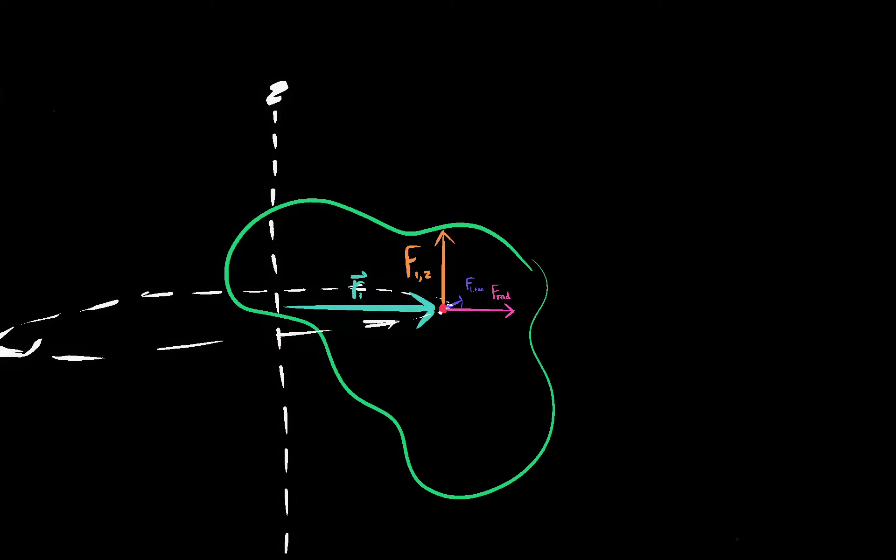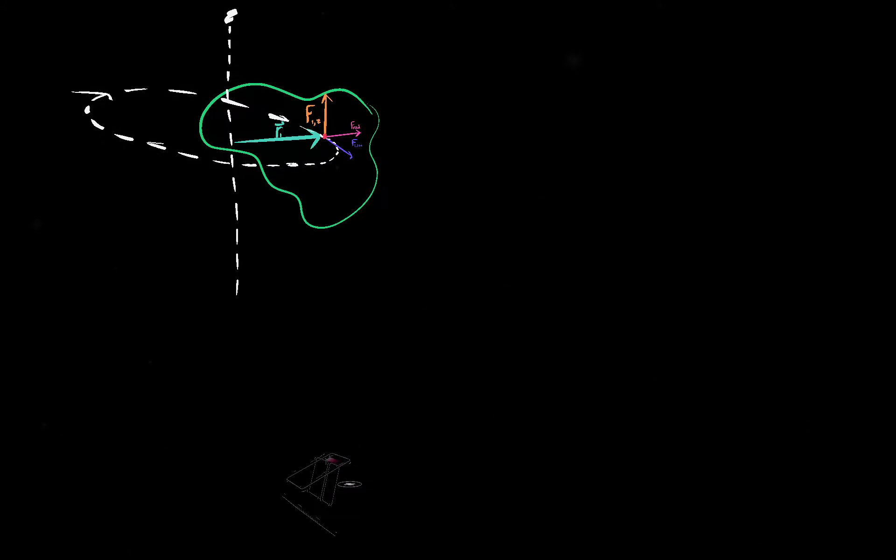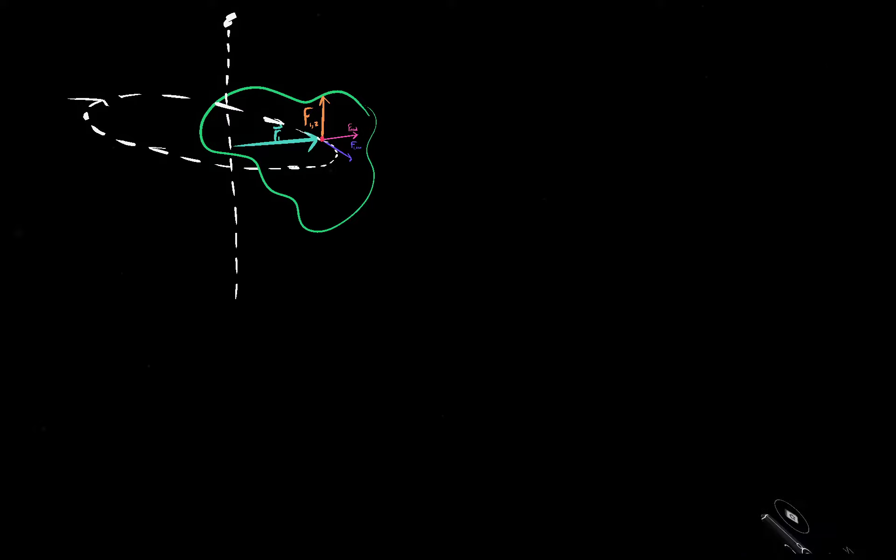Newton's second law says that F_tan is equal to ma. So let me smallify this guy up there in the corner. We have F_tan being equal to ma. But the a is the tangential acceleration specifically, because acceleration can have multiple components as well. And also notice this is regular a, linear a, not alpha. This is not rotational acceleration. This is just regular acceleration.